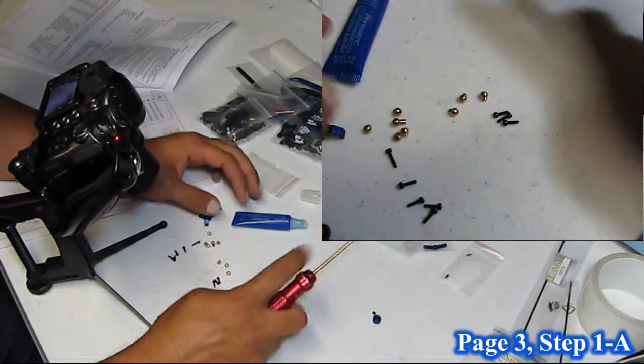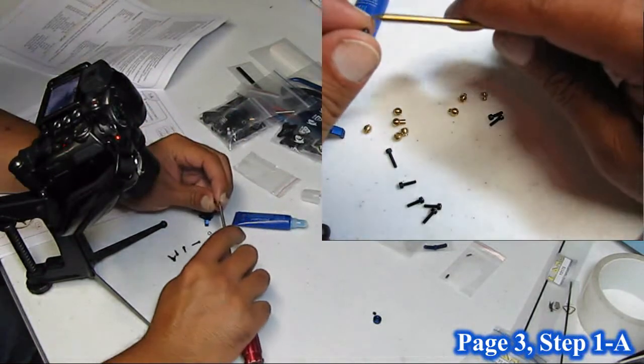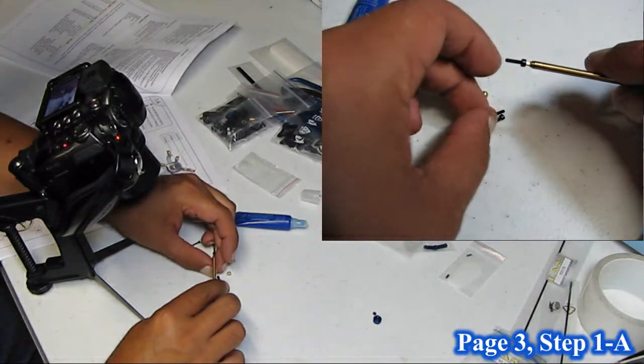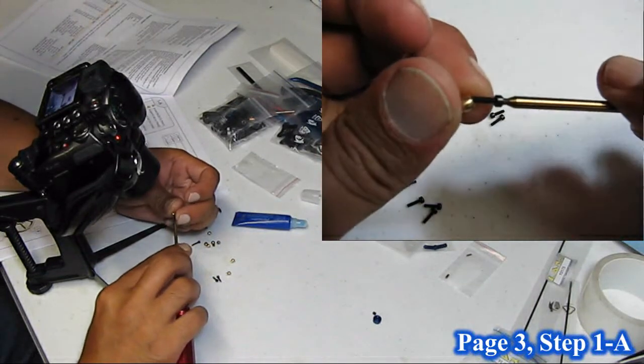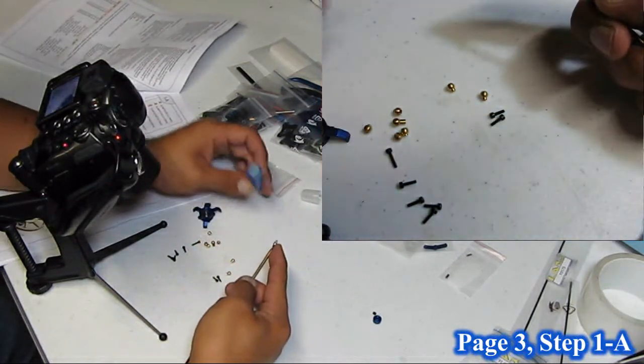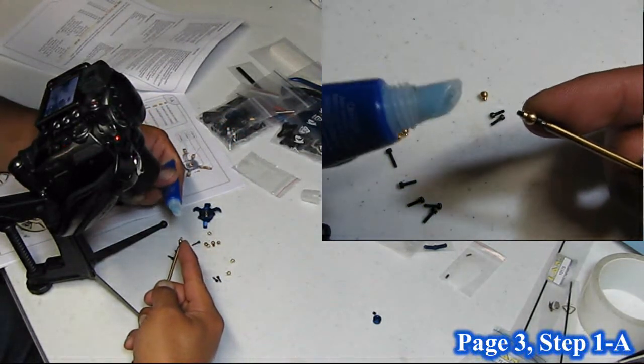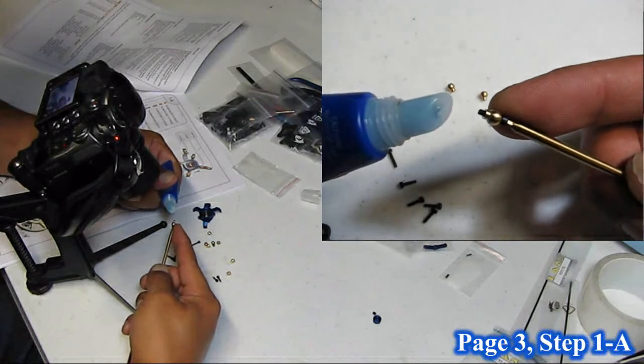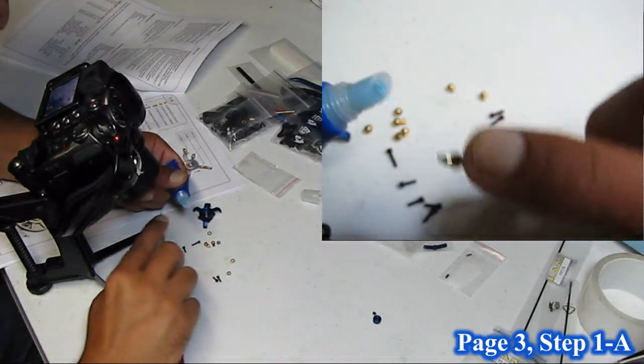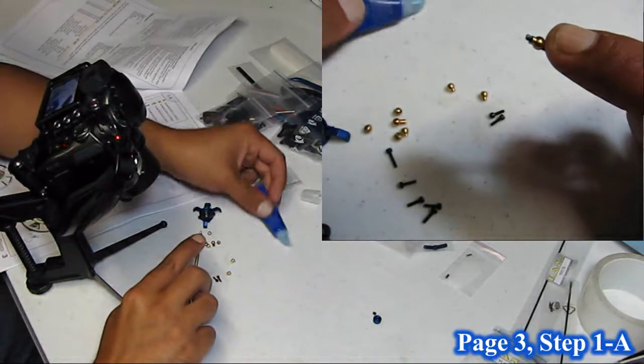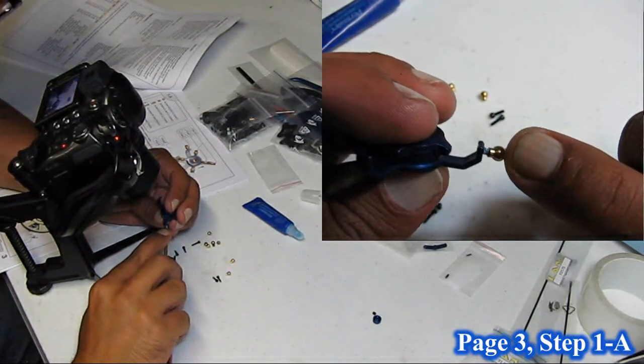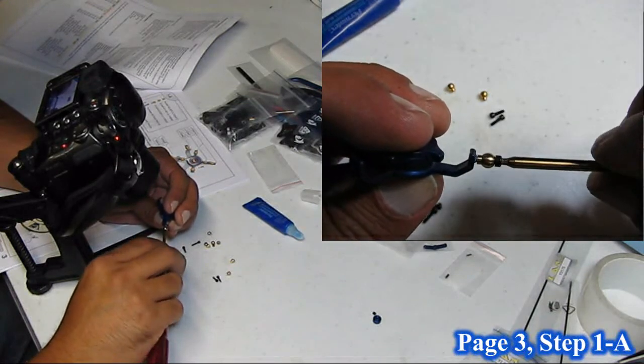You basically start off by getting them started on your driver, through the ball, and a little bit will stick out. I usually secure it with my finger there, and then get a little Loctite coming out. Just get a little dab into the threads, that'll be enough.